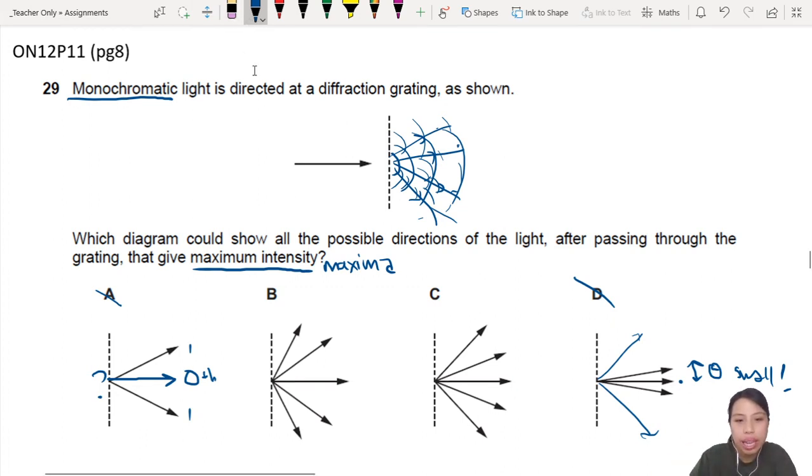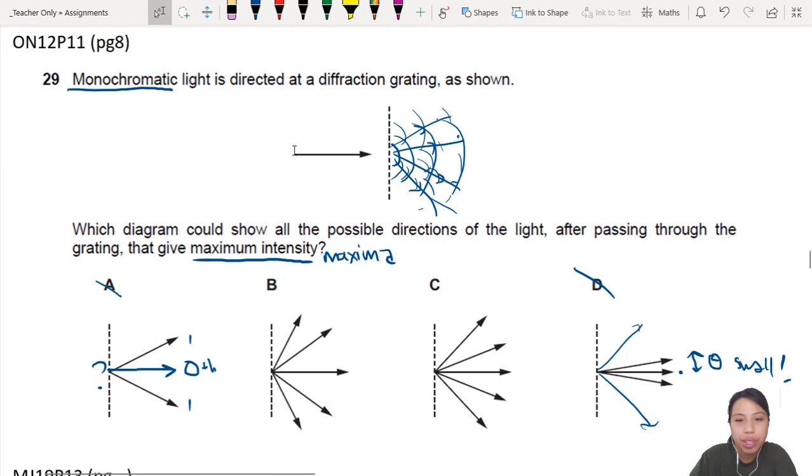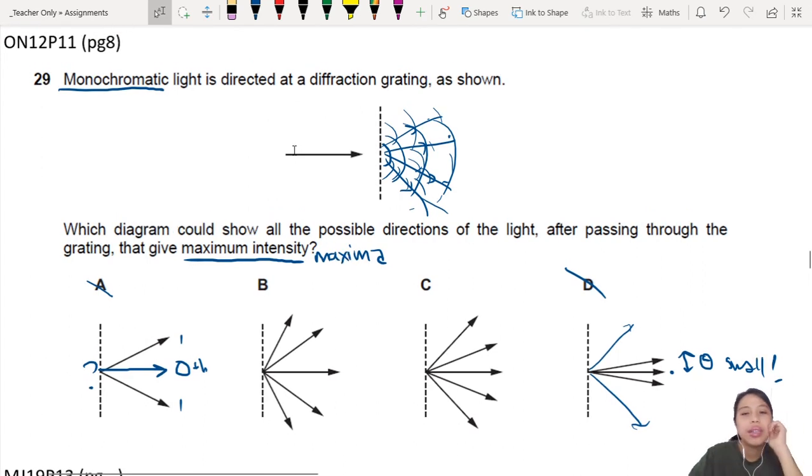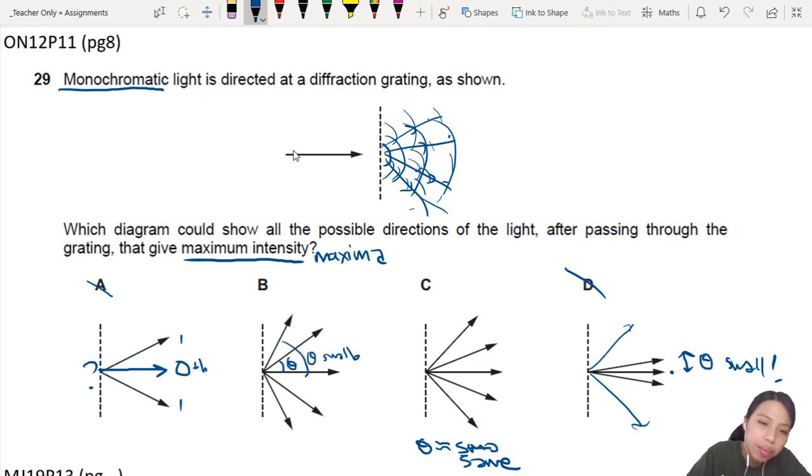The hint is, look at the angles between the arrows. Between your first order, second order maxima. This one here, the angles are almost the same. Looks the same, unless my eye got a problem. Almost the same. And B, the angles are smaller. The first order angle is big. And then the second order angle is smaller. How do we know which is which? Well, you can look at the formula.